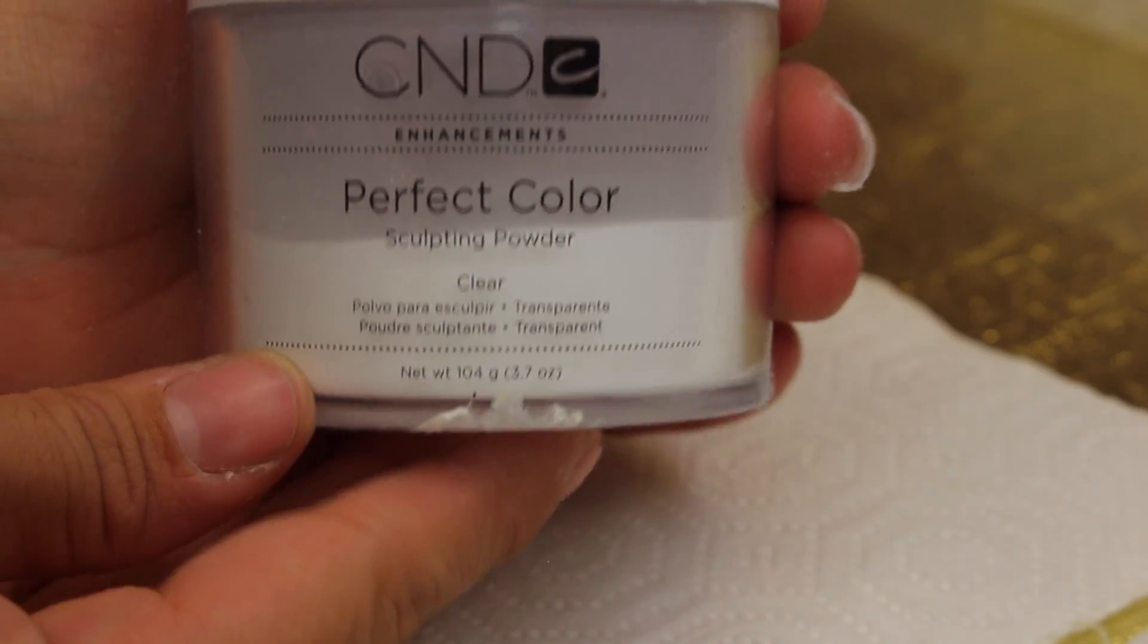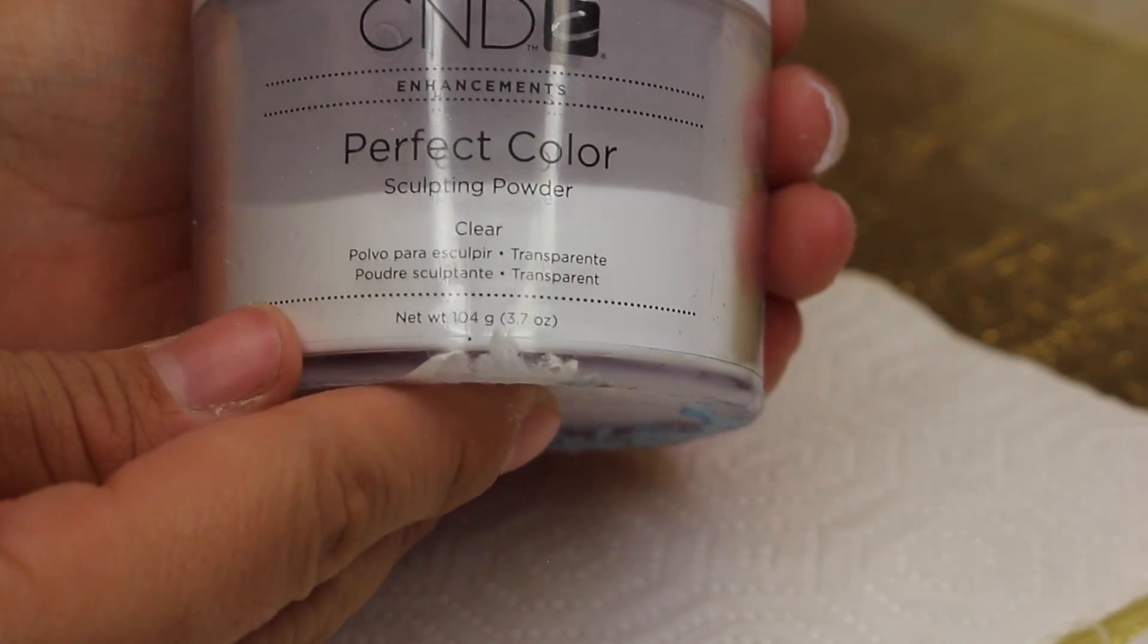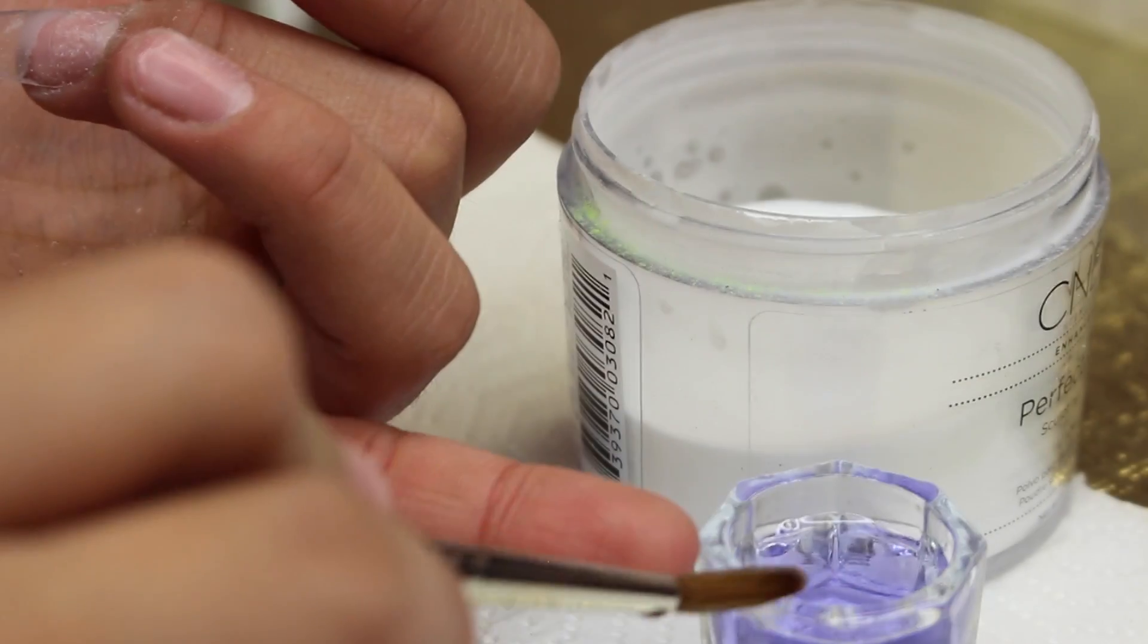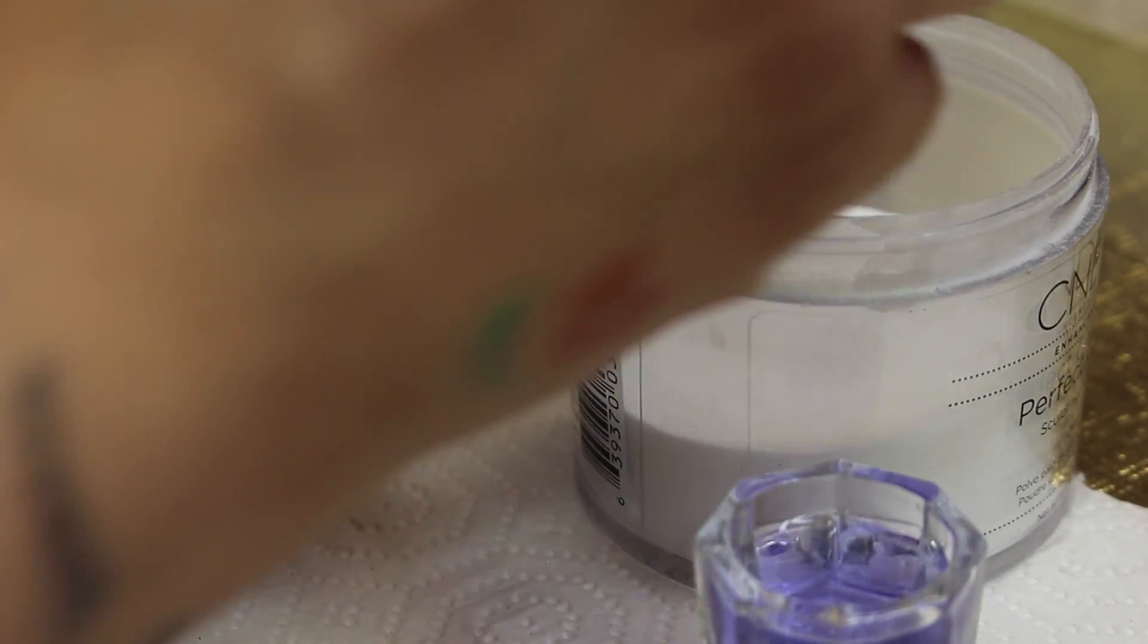I'm going to go in with the CMD Perfect Color Sculpting Powder. This one's in the shade clear. I'm just going to be dipping my brush in monomer and picking up a bead.